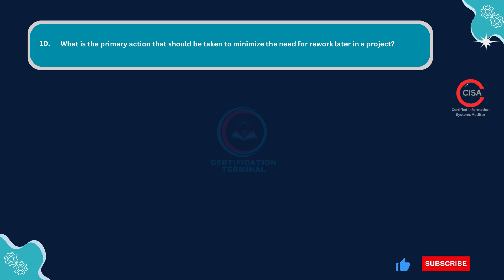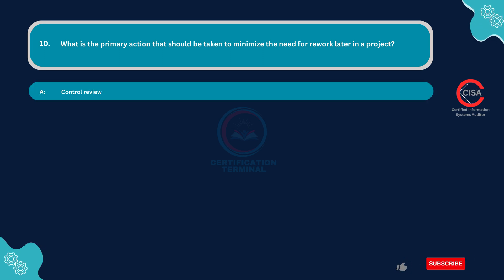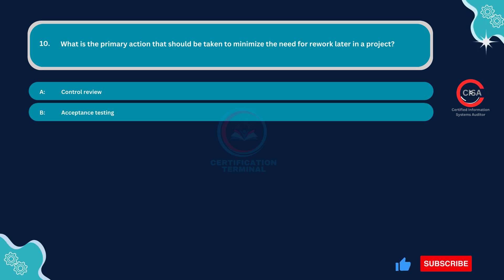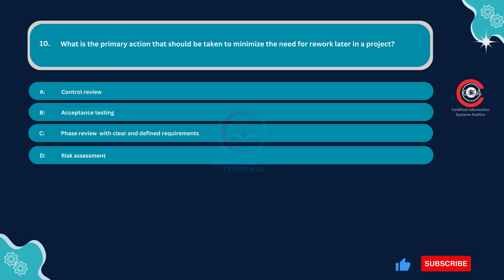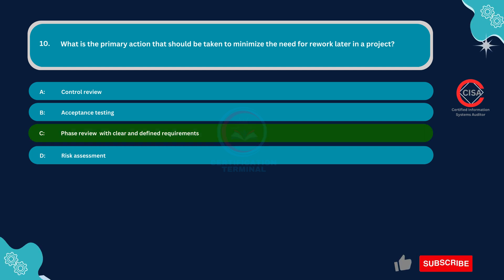Question number ten: What is the primary action that should be taken to minimize the need for rework later in a project? Option A: Control review. Option B: Acceptance testing. Option C: Phase review with clear and defined requirements. Option D: Risk assessment. The correct answer is Option C: Phase review with clear and defined requirements.